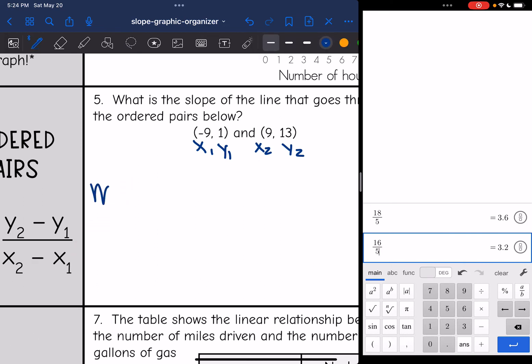It'll be y2 minus y1, so 13 minus 1, all over x2 minus x1, so 9 minus negative 9. 13 minus 1 is 12. 9 minus negative 9 is the same thing as 9 plus 9, which is 18. And 12 over 18, those are both divisible by 6. 12 divided by 6 is 2, and 18 divided by 6 is 3. So that slope is 2 thirds.